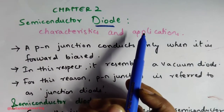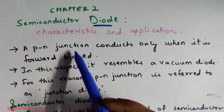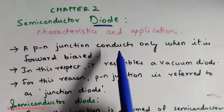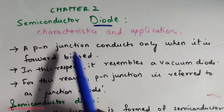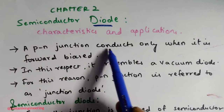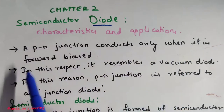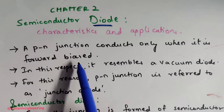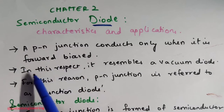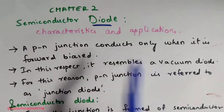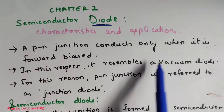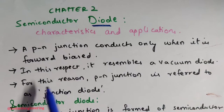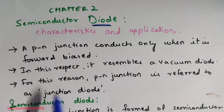We'll see what is the semiconductor diode and its characteristics and applications. A PN junction diode conducts only when it is in forward bias. When we have a P region and N region, the junction formed between those is the PN junction. That will conduct — meaning electricity will pass — only when it is in forward bias. In this respect it resembles a vacuum diode, and for this reason the PN junction is called a junction diode.